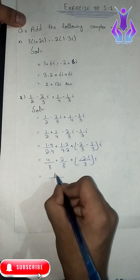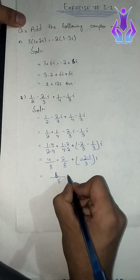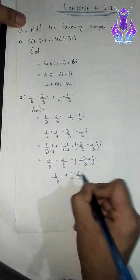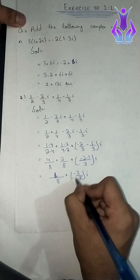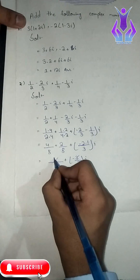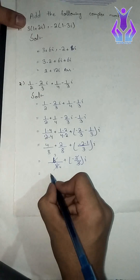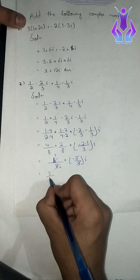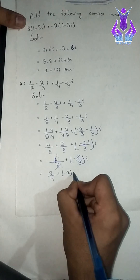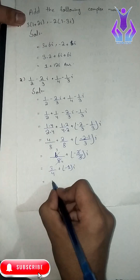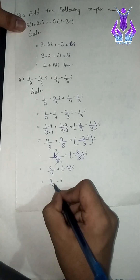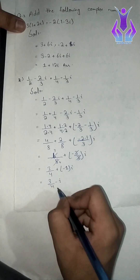4 plus 2 is 6, over 8. And for the imaginary part, minus 3 divided by 3 iota — the 3 cancels — giving minus 2. So 3 is 6, 2 by 4 is 8, giving 3 divided by 4. Plus minus 1 iota. So we have 3 by 4 plus minus iota. This is the real part and this is the imaginary part. This is our answer.